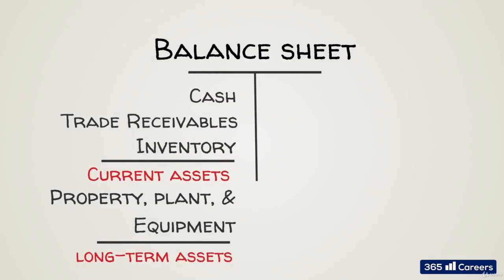The main distinction we can make between different assets is whether they can be considered current or non-current. Cash, receivables, and inventory are three excellent examples of current items — they can easily be converted into cash. PP&E assets are a great example of assets that are difficult to convert into cash and are therefore classified as non-current.